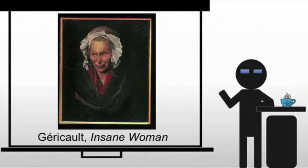Géricault also paints Insane Woman. This is not exactly a piece that would be acceptable today, but remember the period that we're dealing with. We're in the early 19th century in France. Things are very, very different.